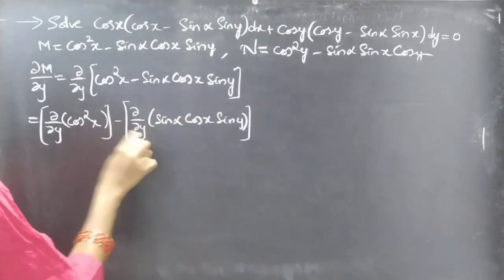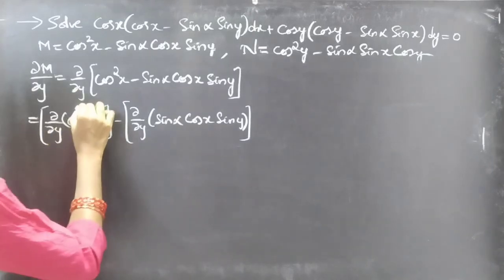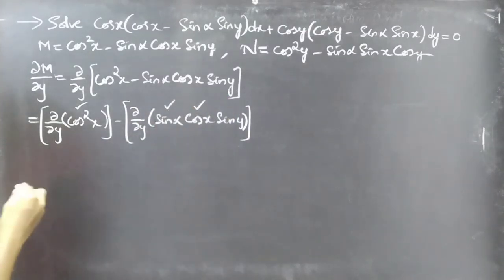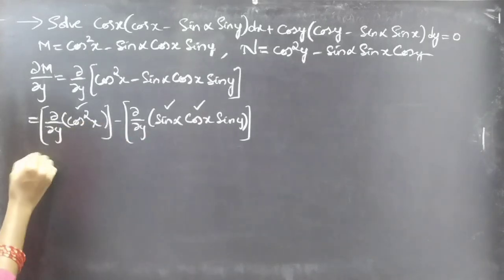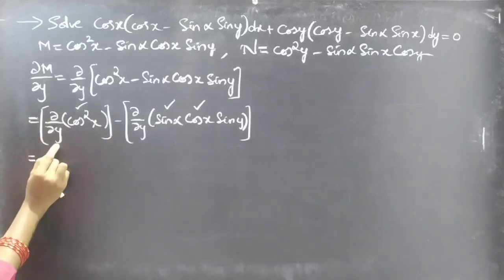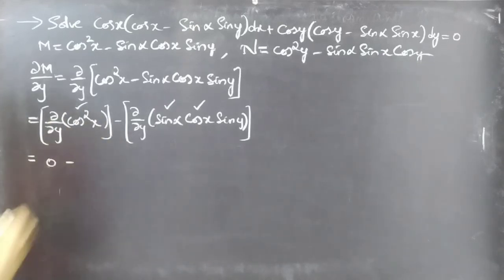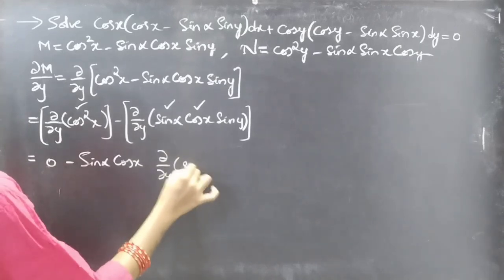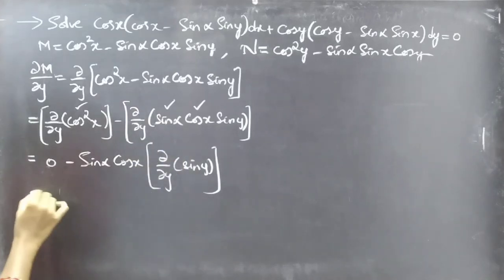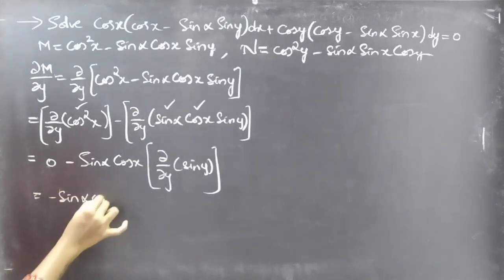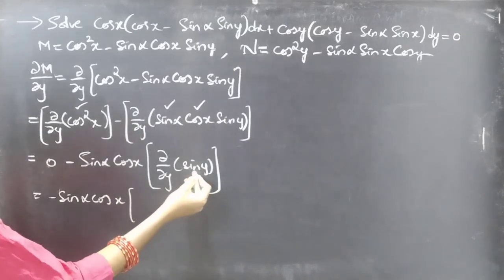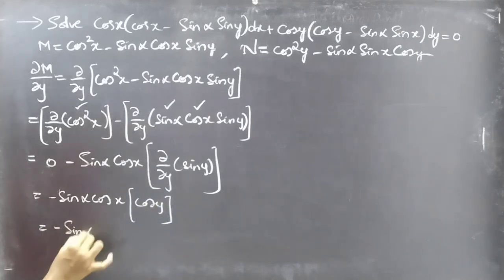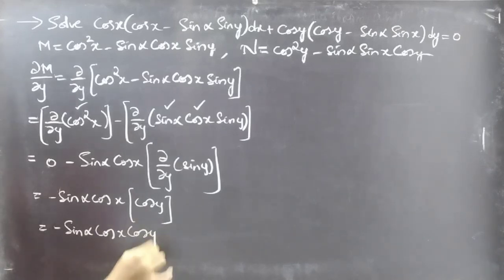Since we are doing the partial derivative with respect to y, x is treated as constant. In the first term cos²(x) is constant; sin(α) and cos(x) are also constant. The partial derivative of the constant first term is 0, and we get -sin(α)cos(x) times the partial derivative of sin(y), which is cos(y). This gives us -sin(α)cos(x)cos(y).